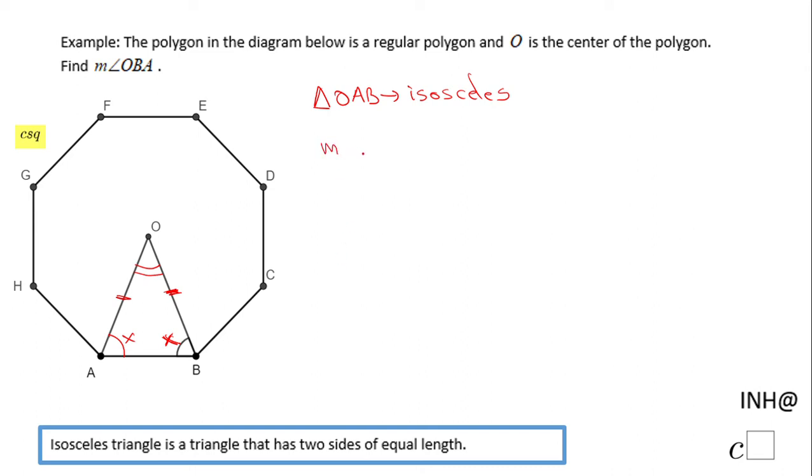The easiest way to find out is counting how many sides we have: one, two, three, four, five, six, seven, eight. We have eight sides. I'm gonna divide 360 by 8. The measure of that central angle of the polygon is 360 divided by 8, which is 45 degrees.